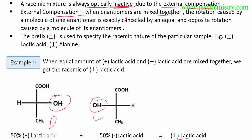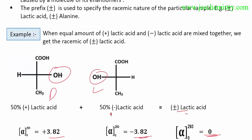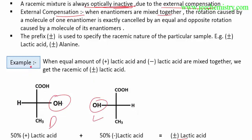External compensation means that when two enantiomers are mixed together, the rotation caused by a molecule of one enantiomer is exactly cancelled by an equal and opposite rotation caused by a molecule of its enantiomer. That's why they cancel each other's rotations and the specific rotation of the mixture is zero. The prefix plus-minus is used to specify the racemic mixture.